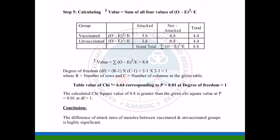The chi-square value is the sum of all four (O - E)² / E values: 3.6 + 0.8 + 3.6 + 0.8 = 8.8. Degree of freedom = (r - 1)(c - 1) = (2-1)(2-1) = 1, where r = number of rows and c = number of columns. The table value of chi-square is 6.64 corresponding to p = 0.01 at df = 1. The calculated chi-square value of 8.8 is greater than the table value of 6.64. In conclusion, the difference in attack rates of measles between vaccinated and unvaccinated groups is highly significant. Thank you.